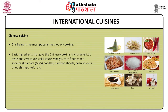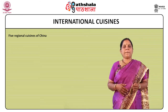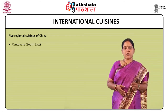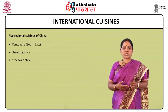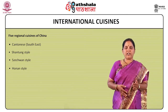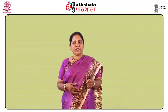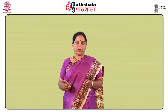Basic ingredients that give Chinese cooking its characteristic taste are soya sauce, chilli sauce, vinegar, corn flour, monosodium glutamate or MSG, noodles, bamboo shoots, bean sprouts, dried shrimp, tofu etc. Five regional cuisines predominate in Chinese cookery: Cantonese or Southeast, Shantung style, Sichuan style, Hunan style and Peking style. One dish may require one, two or three cooking methods and each will produce a different effect.